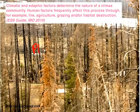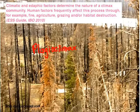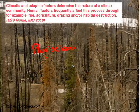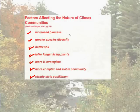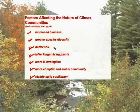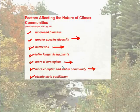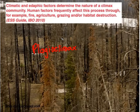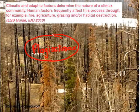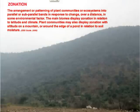Consider what would happen if our climax community were affected by human intervention — then we would have something referred to as plagio-climax. Climatic and soil (edaphic) factors determine the nature of a climax community, but human factors frequently affect this process through fire, agriculture, grazing, and habitat destruction. This leads to erosion or deterioration of the good qualities of the climax community — soil quality deteriorates, species diversity deteriorates, and the complex stable community becomes less so. These negative effects are referred to as plagio-climax.